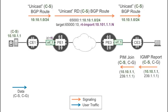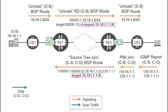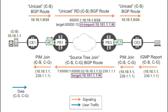But how does PE3 know that magic number if it was dynamically generated by PE1? PE1 modified the unicast route to the source by adding a route import community with exactly this information. PE3 just needs to copy that value into the route target of the source tree join route, and the magic is done.